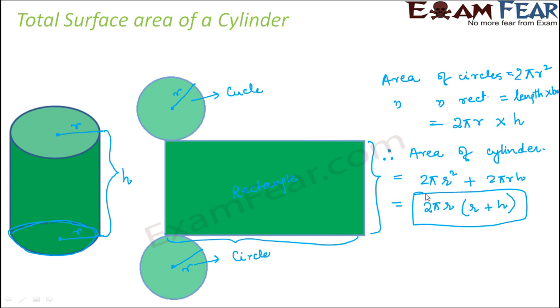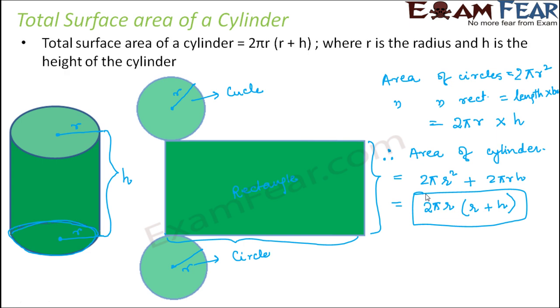So it sounded complex, but it is pretty simple. The total surface area of a cylinder is equal to 2πr(r + h), where r is the radius and h is the height of the cylinder.